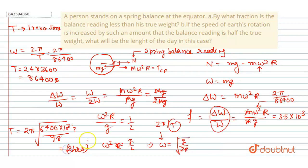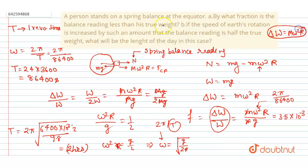So the change in weight formula N = mg − mω²R gives the first part, and using ω²R = g/2 gives the new length of the day as 2 hours. That's the complete solution.